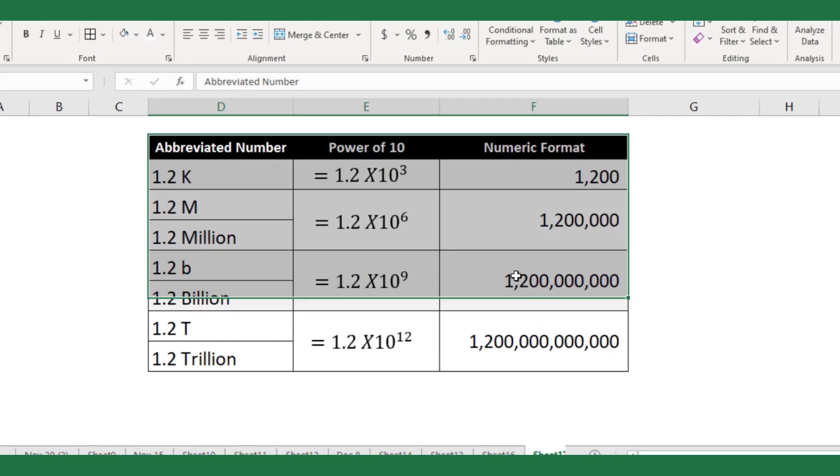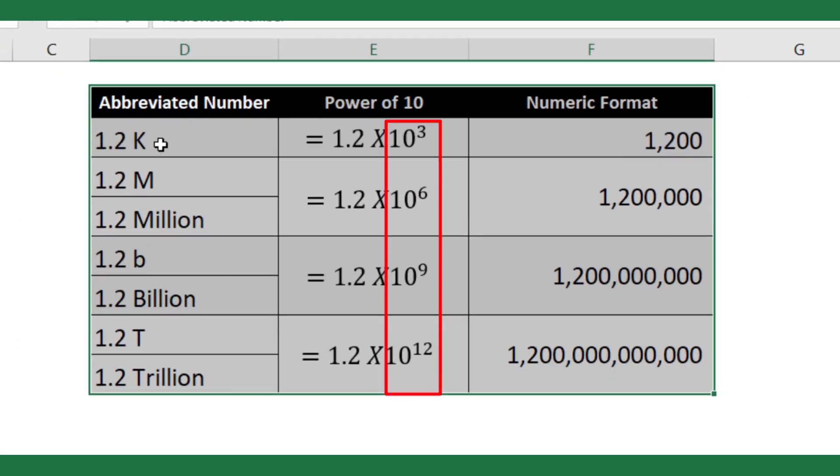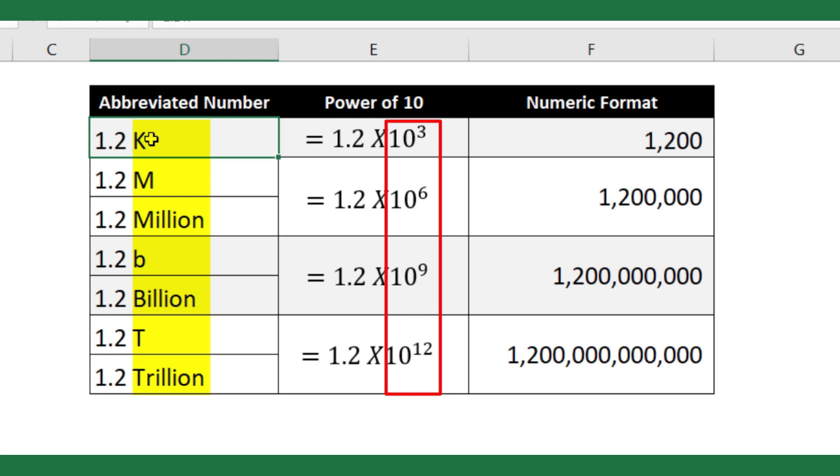As you can see in this table showing the number of digits to be added for each suffix letter. 1.2K means the number 1.2 to be multiplied by one thousand, that is ten to the power three. Then the result will be 1200.